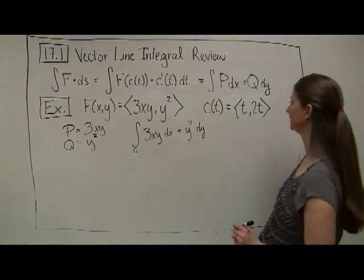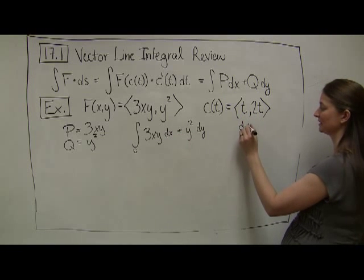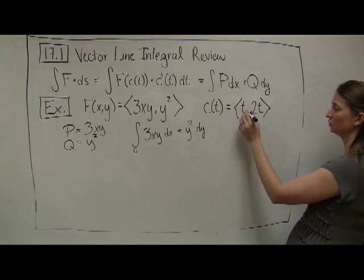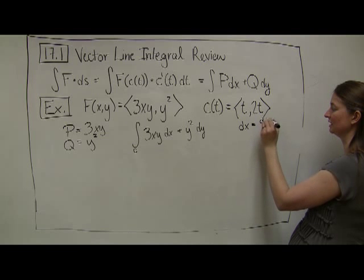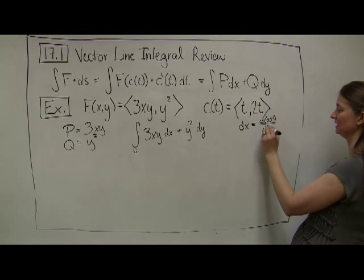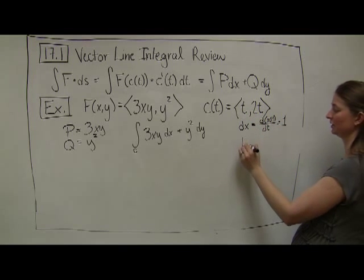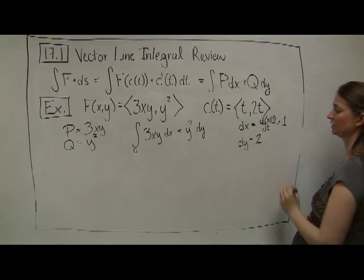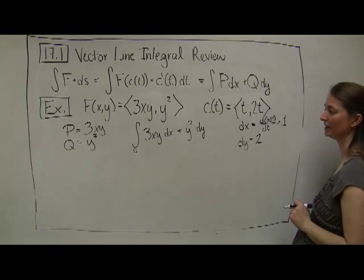When I compute this, I have to go into my t variables. My dx is the derivative of the x component with respect to t, so the derivative of t is 1. Similarly, dy is the derivative of 2t, which is 2. Now I know what dx and dy equal.